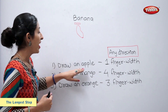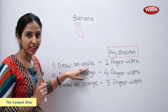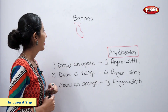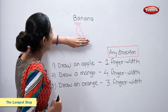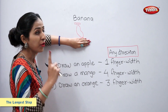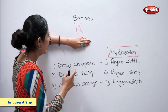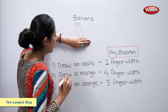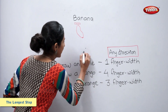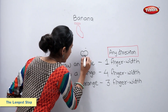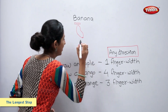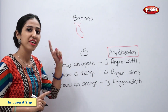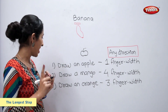First is an apple at a distance of one finger width. One finger width. An apple at a distance of one finger width.